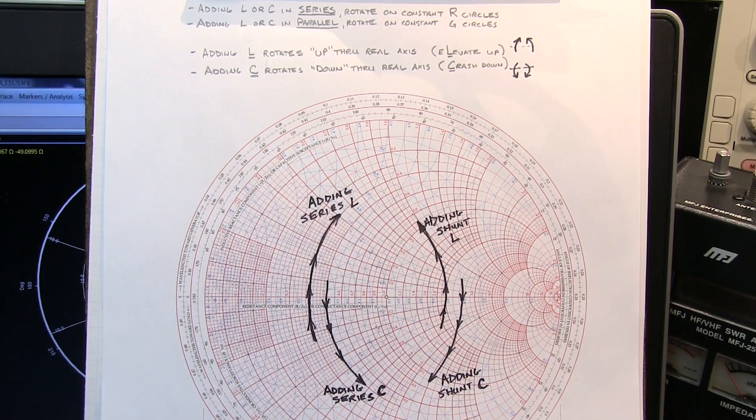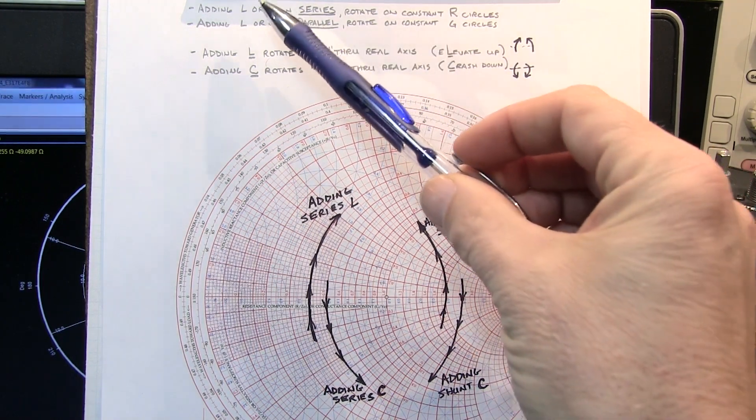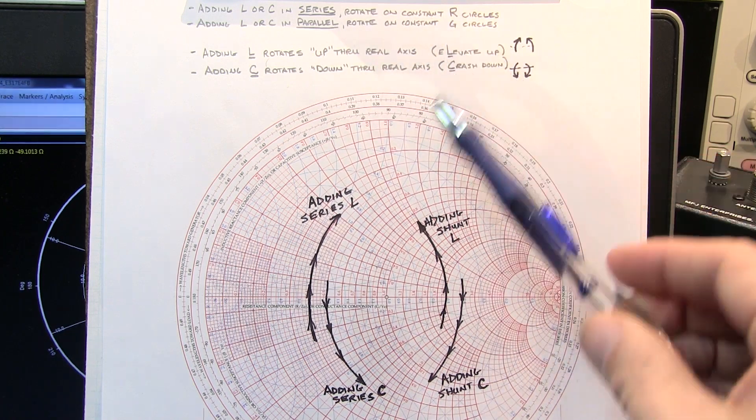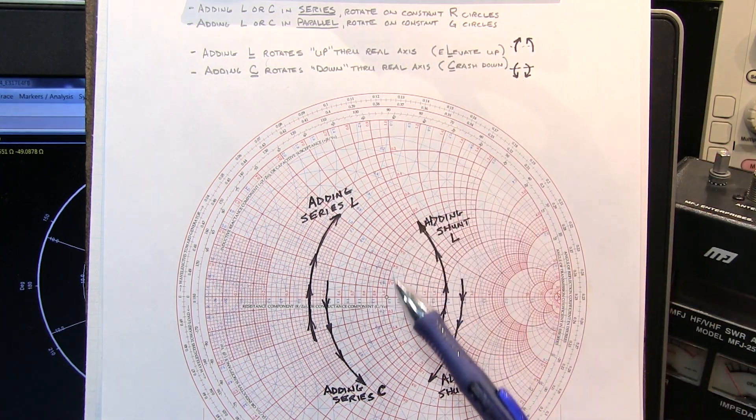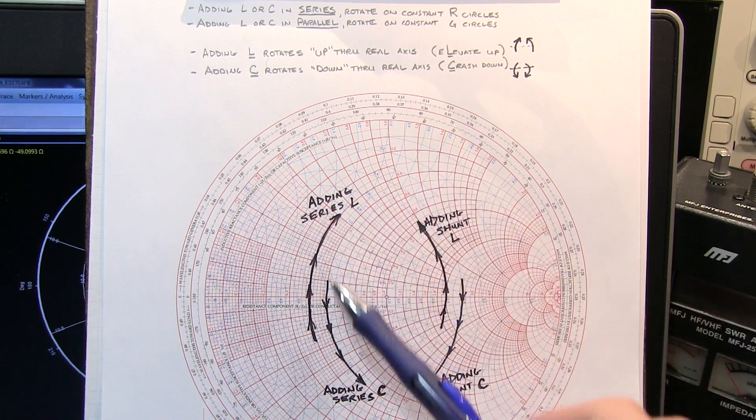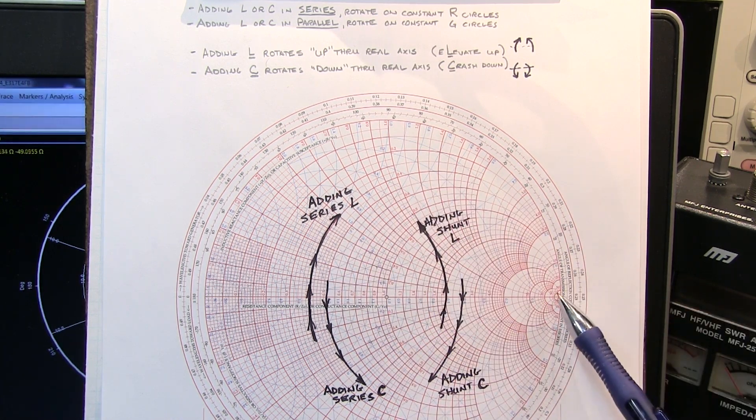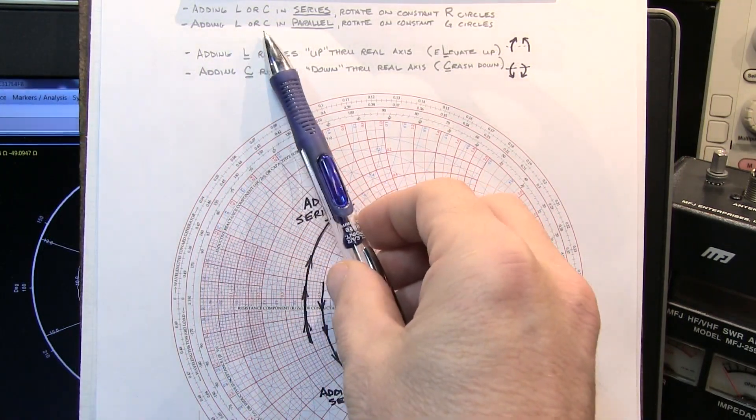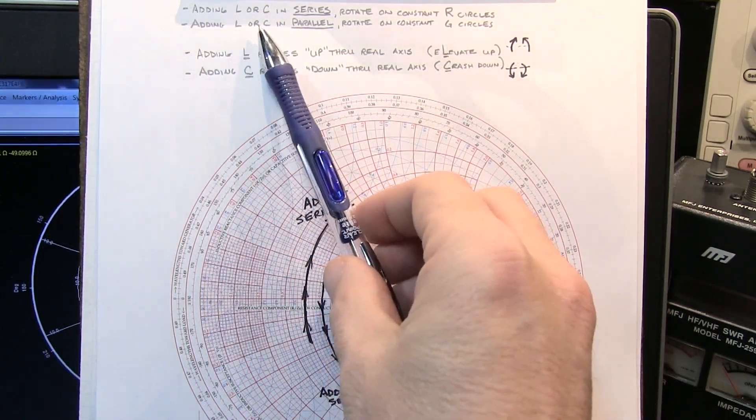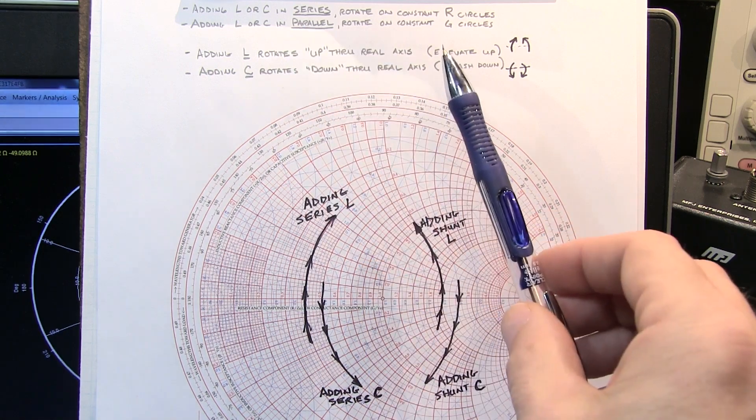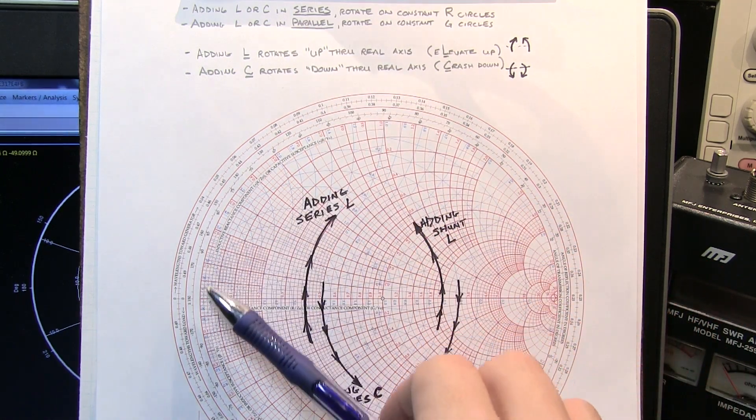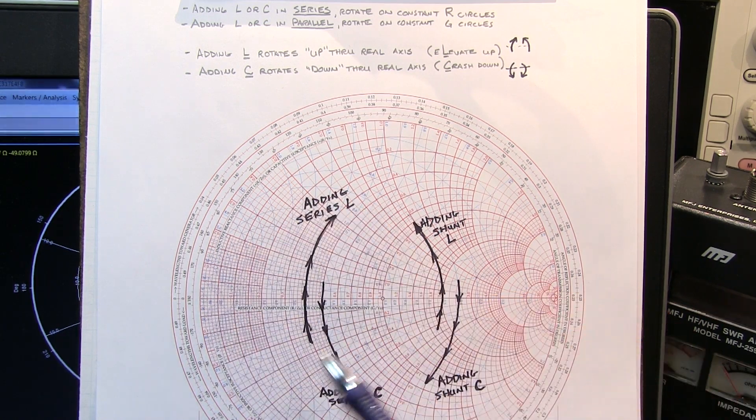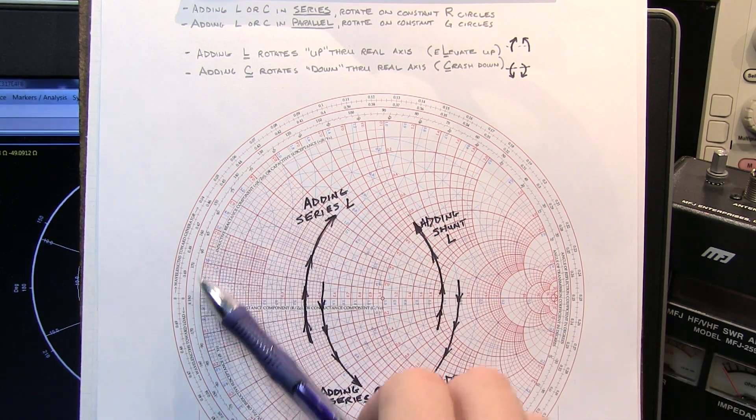You may remember from video number 274 that adding an inductor or capacitor in series with a load will rotate us on the Smith chart along the constant resistance circles, which are these red circles that are all tangent to the open circuit point on the Smith chart here. Adding a shunt inductor or capacitor, or adding a capacitor and inductor in parallel with the load will rotate us on the Smith chart along the constant conductance circles, which are these blue circles that are all tangent to the short circuit end of the Smith chart.